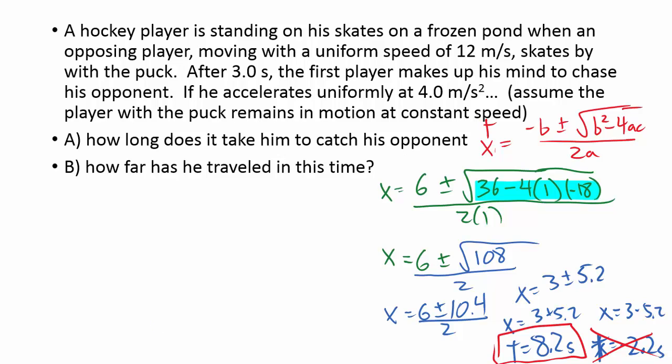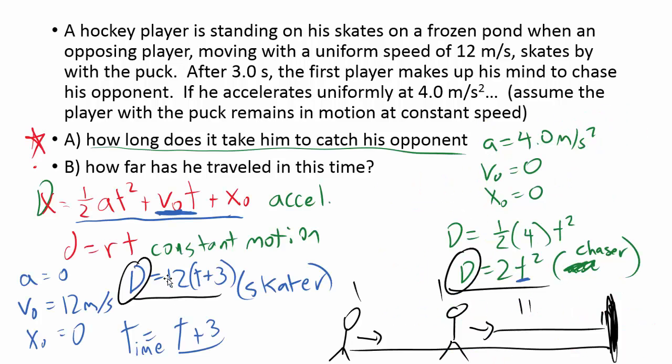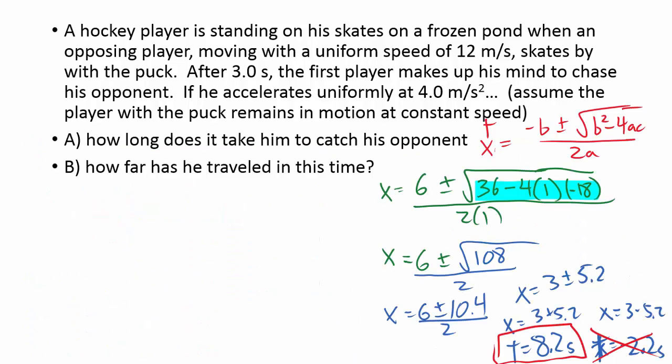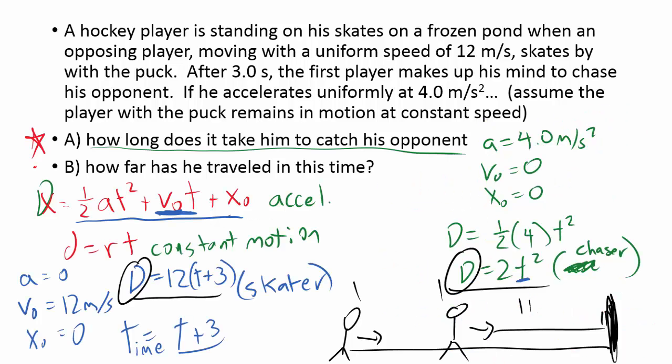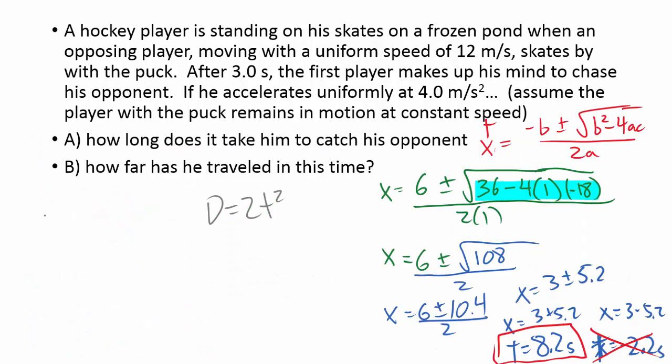Now let's go ahead and answer the final question. From the previous slide, we had these two equations. We had one for the skater and one for the chaser. We had D equals 2t squared for the chaser equation, and we had D equals 12 times (t plus 3) for the skater. We're trying to find the distance that they traveled. Well, all we have to do is plug in our 8.2 for t. It doesn't even matter which one we plug these into. We should get the same answer in both. So I'm solving for the distance now.